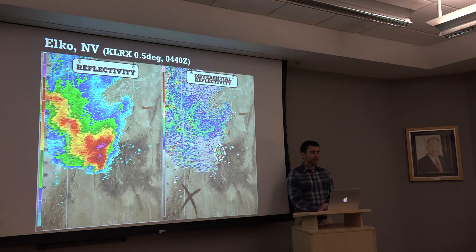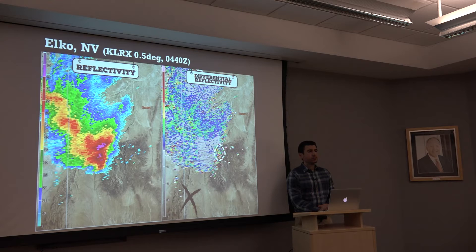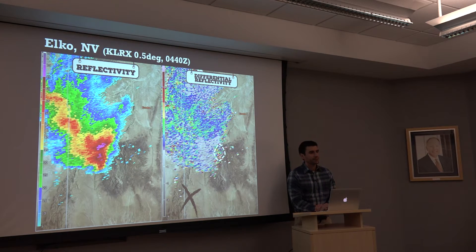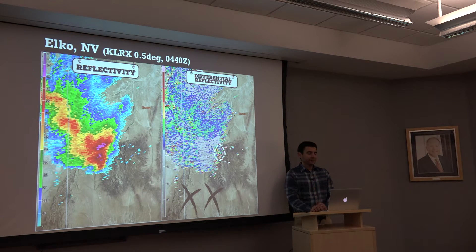Looking at ZDR — in areas of similar reflectivity around 20 to 30 dBZ elsewhere, it's nice and smooth, generally about 0.5 to 1 dB. But in this area of 20 to 30 dBZ reflectivity, we get speckly, noisy ZDR. It just doesn't look like what we'd expect from nice meteorological returns. We're still not too sure about this. That's going to be strike two.